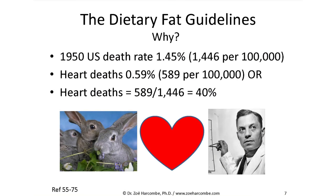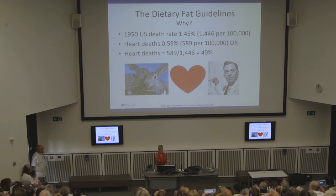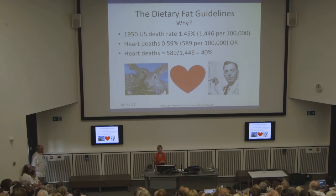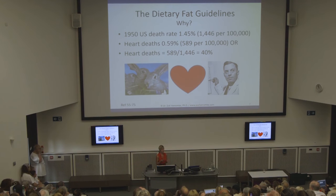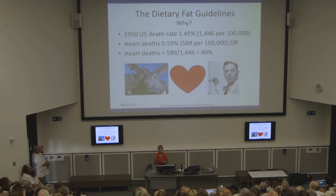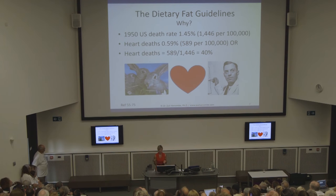Why did we do this? In 1950, the death rate in the US from all causes was 1.45% - about 1,400 per 100,000 - and about 589 per 100,000 were dying from heart disease. You can either present heart disease as 0.59% in any one year, or as 40% of all deaths - and that's what we do. We're making this a bigger issue than we need to. All these dietary guidelines came about because of heart disease.